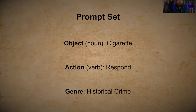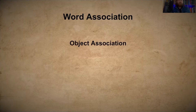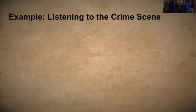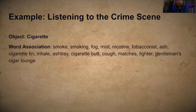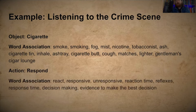After generating the prompt, I do a word association for the object I've generated — just a minute or two to write down as many words that come to mind, getting the creativity going and waking up the creative side of the brain. I also do that for the action or verb. For 'Listening to the Crime Scene,' I wrote down words like smoke, smoking, fog, mist, nicotine. Interestingly I didn't write down bad breath or cancer, but maybe because I already had the idea of historical crime. Then I quickly wrote a few words that came to mind with the action 'respond.'